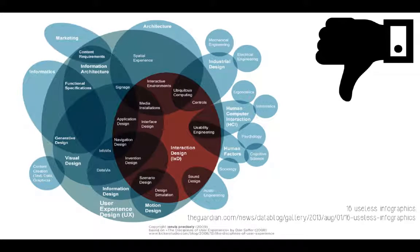A good infographic tells a story clearly and concisely through the visual representation of data. But we need to recognize that not all infographics are created equal. Some don't tell a coherent story, some don't tell it effectively, and some use data in questionable ways — misinterpreting it, misrepresenting it, or leaving out part of the story. A vast number of infographics are created every day, so we need to reflect critically on the data and the way it's used.